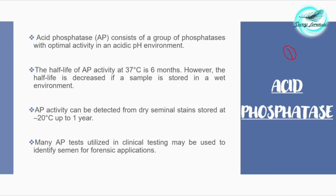Acid phosphatase consists of a group of phosphatases with optimal activity at an acidic pH environment. The half-life of acid phosphatase at 37 degrees Celsius is 6 months, meaning you can detect the presence of semen for up to 6 months at body temperature.